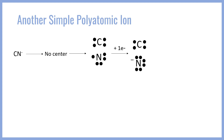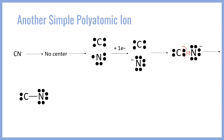Nitrogen is going to go from N with five valence electrons to N- with six. Then we're going to pair up our two atoms such that the lone pairs from one will line up with the vacancies in the other. Since nitrogen is closer to an octet, it makes sense to put the lone pairs on the carbon to fill the nitrogen vacancy. So we can go ahead and use this carbon pair to form a bond with the nitrogen.